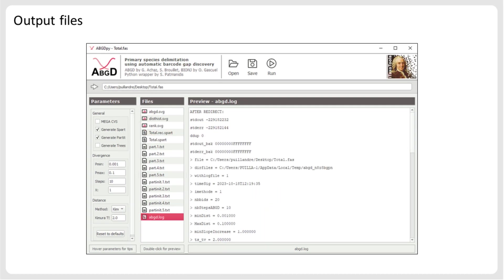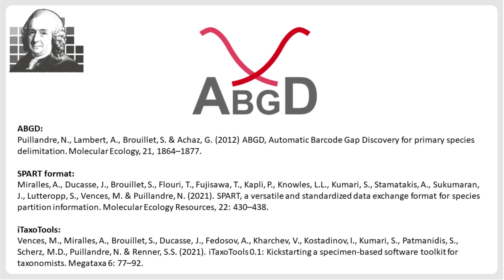Finally, the last file titled ABGD Log provides a summary of the analysis conducted and the corresponding results. You can save all output files to a directory of your choice on your computer using the Save button. For further interpretation of the results, see the original publications of ABGD and the documentation and help files on the ITAXO Tools website. Always remember that the subsets suggested by ABGD constitute primary species hypotheses that should not be uncritically accepted, but should be checked with additional integrative evidence.